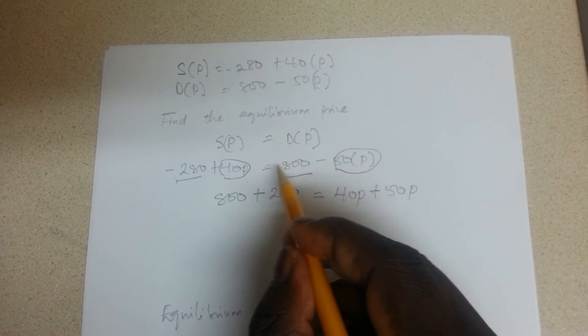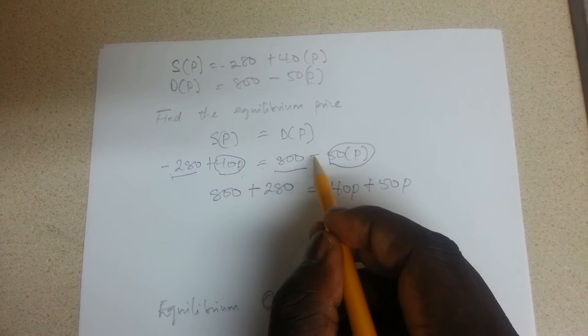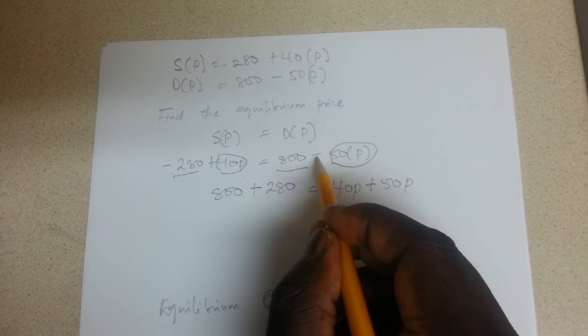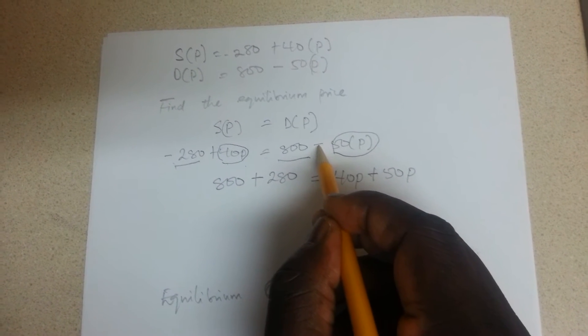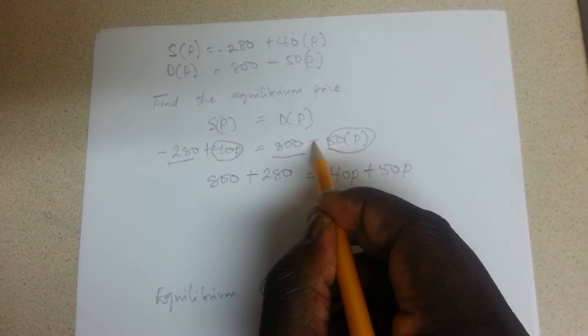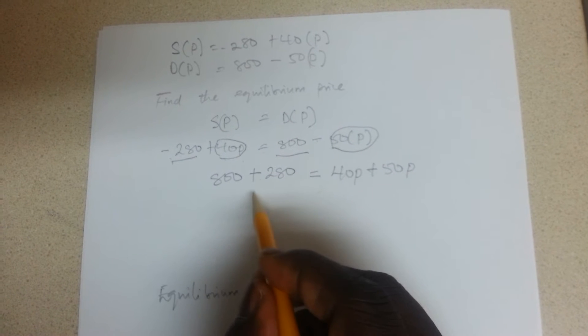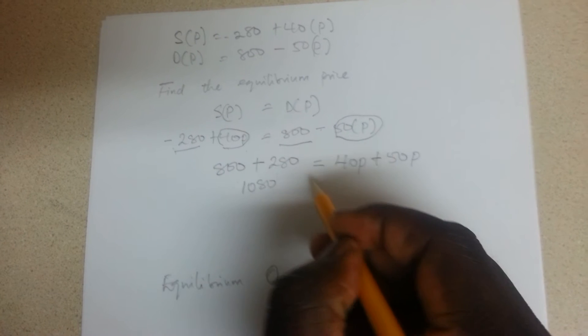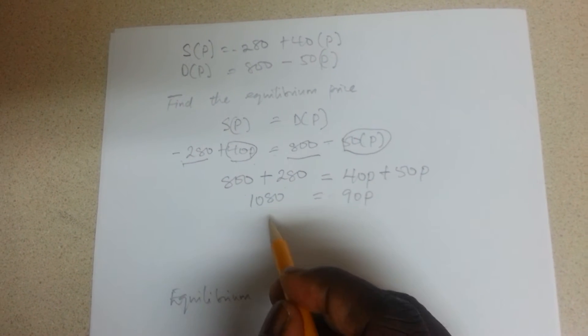Plus 50P. Also this one has to change when crossing over, because when you are crossing the bridge, the sign has to change. If it's addition it has to change to a minus sign, and when it's a minus sign it has to change to addition.